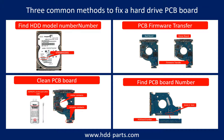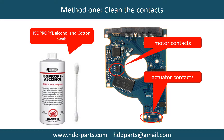There are three common methods to fix a hard drive PCB board. Method 1: Clean the contacts. Cleaning the contacts on the PCB board and also on the hard drive can fix the problem caused by poor connection between the PCB board and the hard drive.